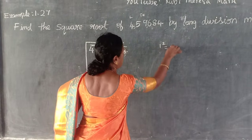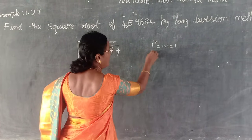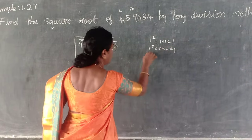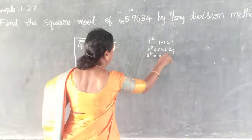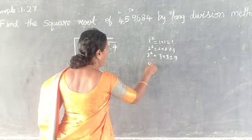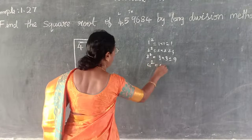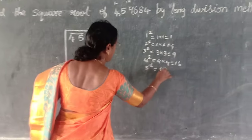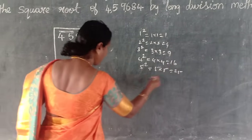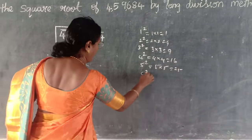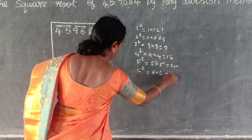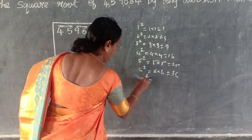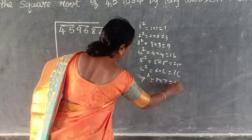1 square — what is it? 1. 2 square — 2 twos are? 4. 3 square — 3 threes are? 9. 4 square — 4 fours are? 16. 5 square — 5 fives are? 25. 6 square — 6 sixes are? 36. 7 square — 7 sevens are? 49.